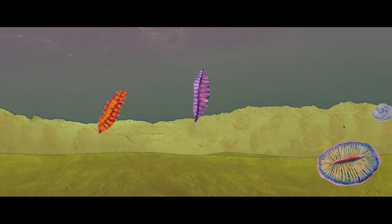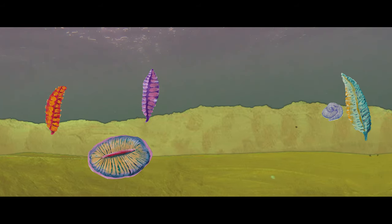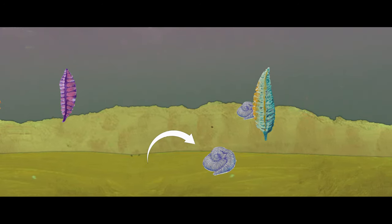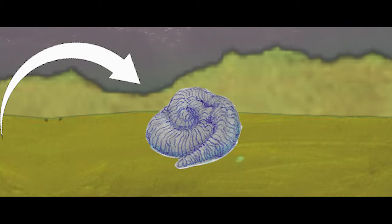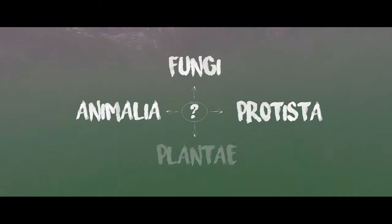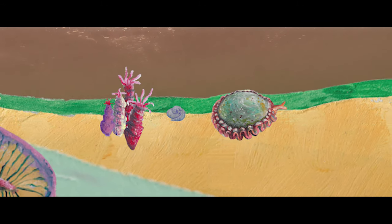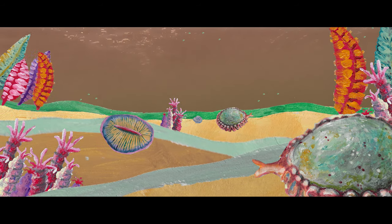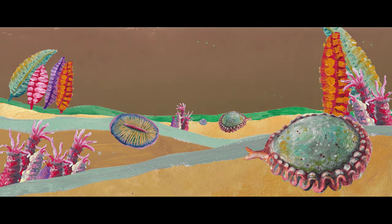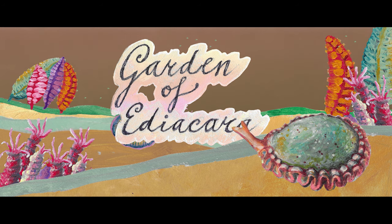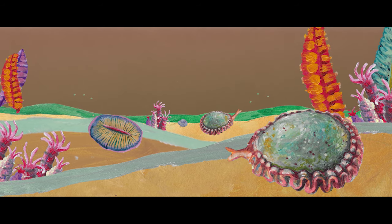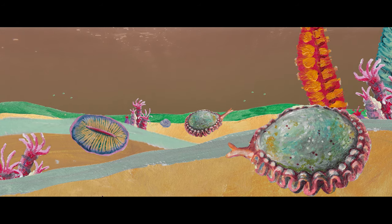Ediacaran communities were located on the seafloor. The organisms themselves exhibited a diverse range of body plans, from frond and bag-like forms, to bilateral, discoidal, and even an unusual tri-radial form, seen in the creature Tribrachidium. It has proven very difficult to determine which specific groups many of these Ediacaran organisms represent. Most Ediacaran organisms appear to have not been able to move and also lacked mouths. The sea floor was apparently a much more peaceful place during this time, and for this reason it is sometimes referred to as the Garden of Ediacara. The microbial mats that covered the Ediacaran seafloor are thought to have provided a source of nutrition for some of these strange organisms, who may have grazed them.